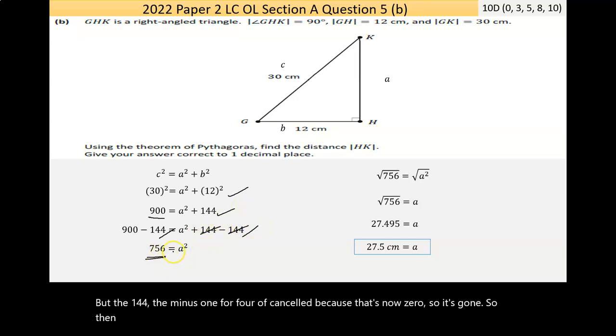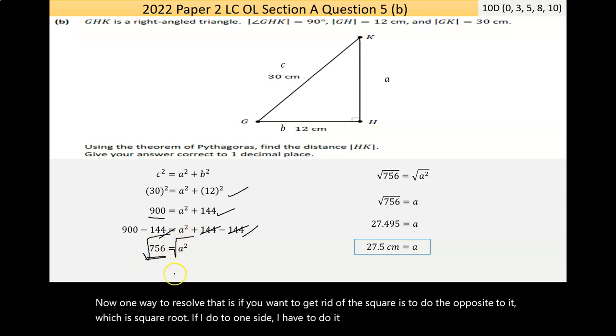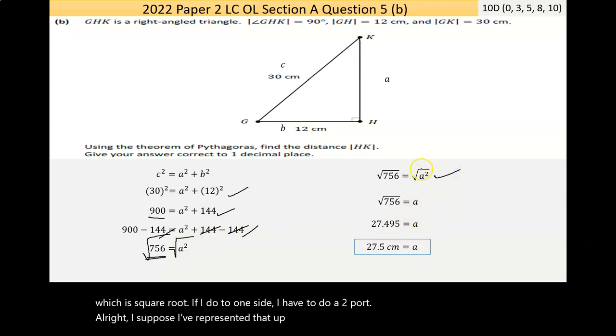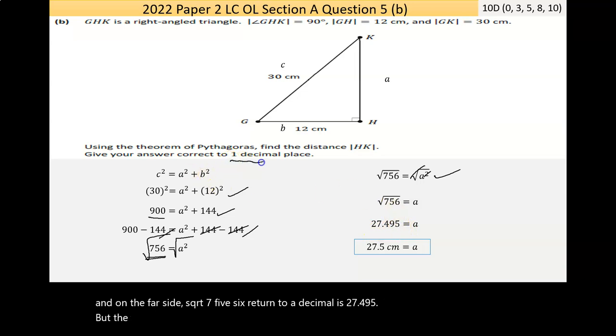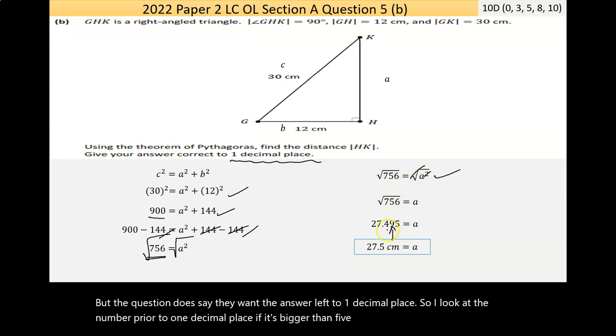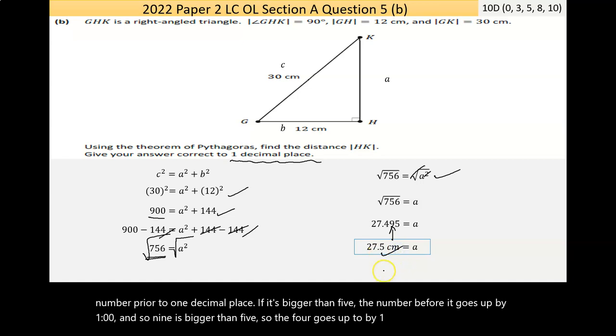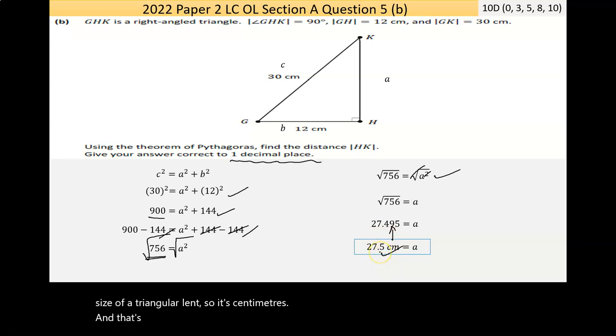And then I go, right, I want the letter to stay on one side. I want everything else to be gotten rid of, for lack of a better word. So I want to get rid of the 144, so I take 144 away from it. I'm allowed to do that. It's algebra. If I do it to one side, I have to do it to the other. Now I've created a calculation. 900 take away 144 is 756. But the 144 and the minus 144 have cancelled because that's now 0, so it's gone. So then I'm left with 756 is equal to some number squared, or some number multiplied by itself. Now one way to resolve that is, if I want to get rid of the square, is to do the opposite to it, which is square rooted. If I do it to one side, I have to do it to both. Now the square root and the square will cancel. And on the far side, the square root of 756, if you turn to a decimal, is 27.495. But the question does say they want the answer left to one decimal place. So I look at the number prior to one decimal place. If it's bigger than 5, the number before it goes up by 1. And so 9 is bigger than 5. So the 4 goes up by 1. I end up at 27.5. The sides of a triangle are length, so it's centimeters. And that's it. I think that's the end of question 5. It is.